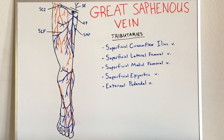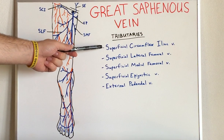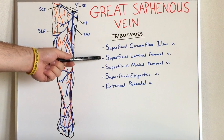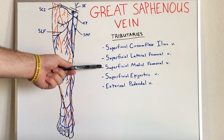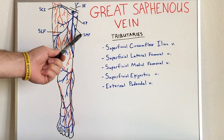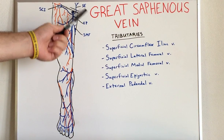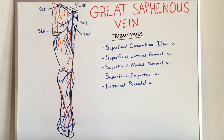There are five main tributaries to the Great Saphenous Vein that I am pointing out here on this diagram. We have the superficial circumflex iliac vein, the superficial lateral femoral vein, the superficial medial femoral vein, the superficial epigastric vein, and the external pudendal vein.